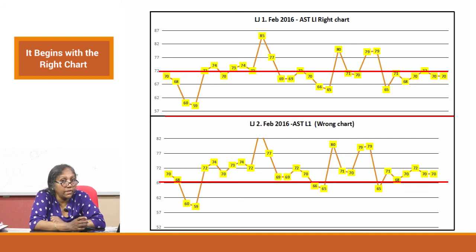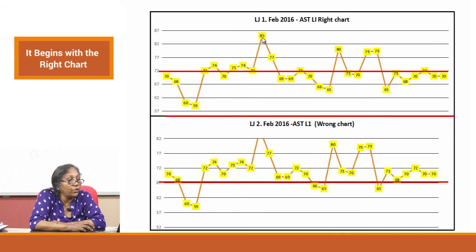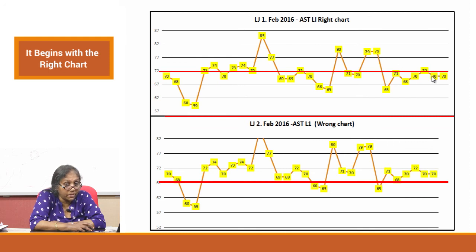Let us look at some dummy examples. The previous one was a real example. Assuming this is a correct chart with mean 72: there is a 2:2S violation within a cross-run, and you would want to reject it and take corrective action. There is a 1:2S at level 1 and another at level 3 — a within-run 2:2S — so you reject the run. The other points subscribe to the rules and the chart is acceptable.